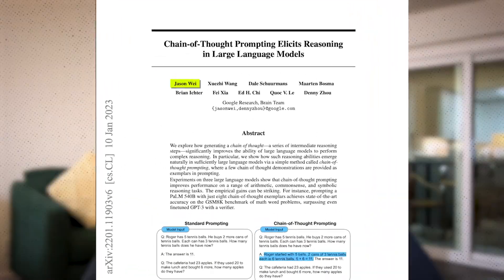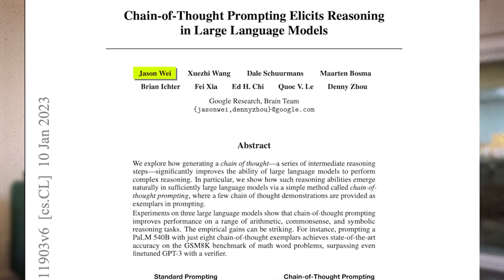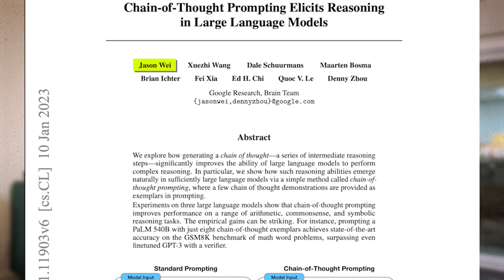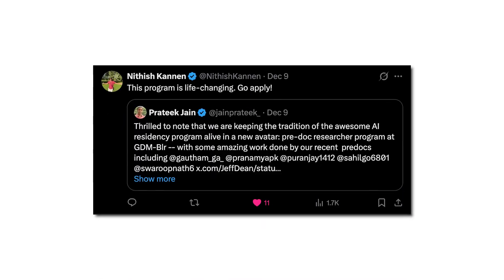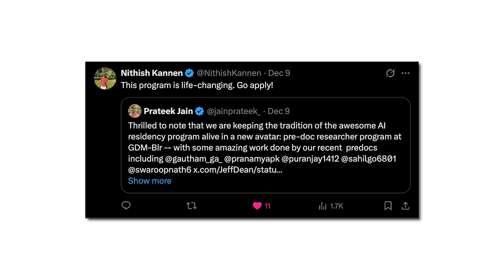Some extremely influential work came out of this program. For example, Jason Wei, one of the leading authors behind chain of thought prompting, did that work during his time as an AI resident at Google Brain. After Google Brain merged with Google DeepMind, the program was discontinued. But the idea behind the program still remains, and it now exists as the pre-doctoral researcher program at Google DeepMind India, which is the role I was in before joining the Gemini team as a research engineer.